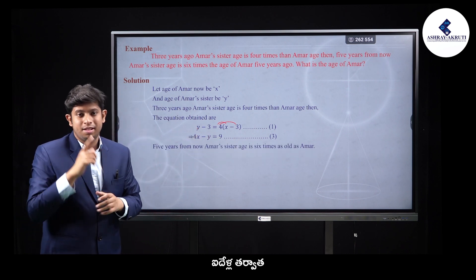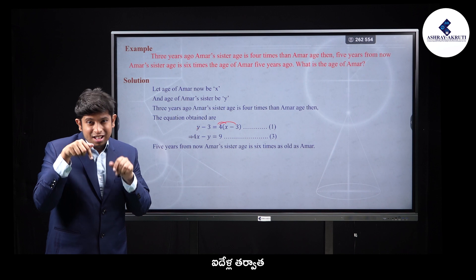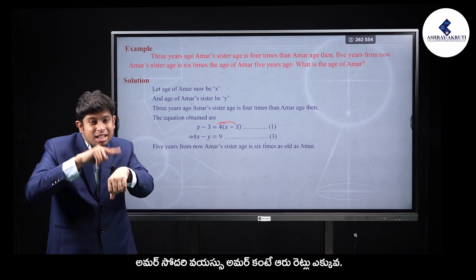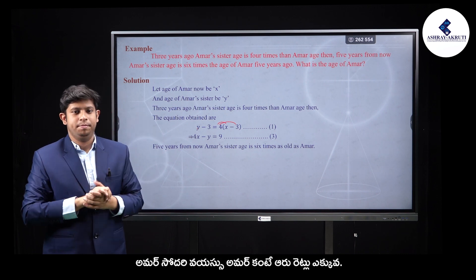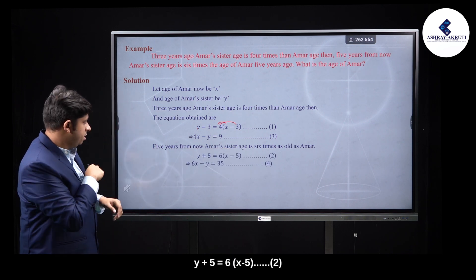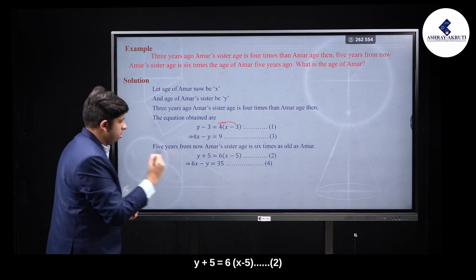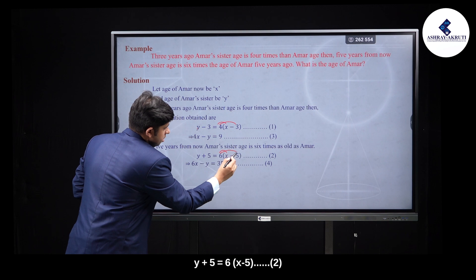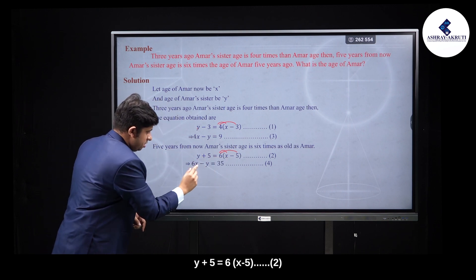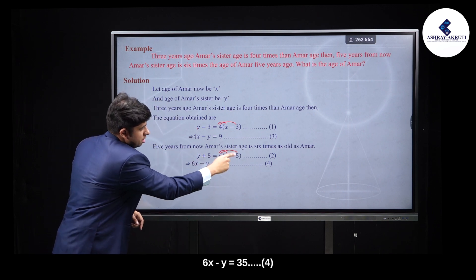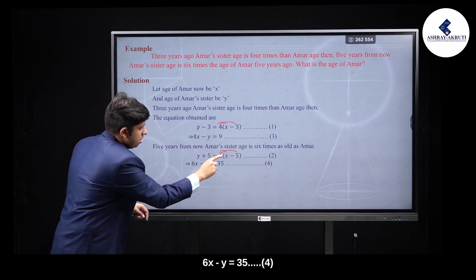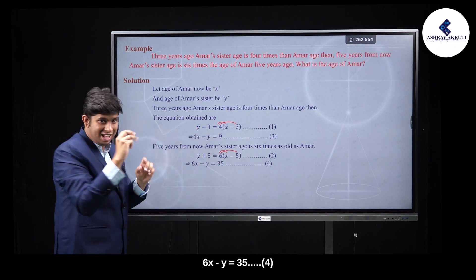After 5 years, the person's age will be 6 more than the sibling's. So: y plus 5 = 6x minus 5. This gives equation 2. And 6x minus y is equal to 35 — this is equation 4.